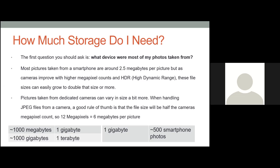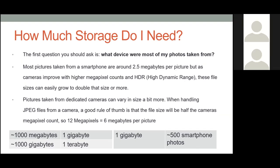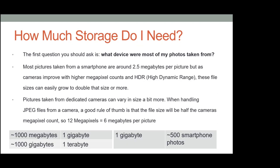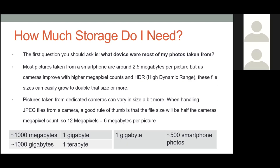Pictures taken from dedicated cameras — like your DSLR or digital cameras — can vary in size. When handling regular picture files, your JPEGs, a good rule of thumb is that the file size will be half the camera's megapixel count. So if your camera is 12 megapixels, it's going to be about 6 megabytes per picture. Using that rule of thumb, one gigabyte is around 500 smartphone photos, give or take — though this number can vary.